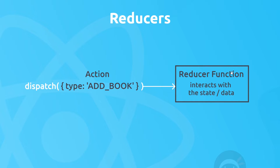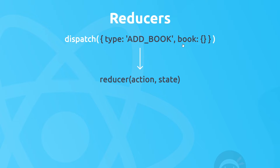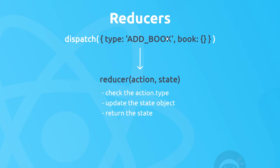Imagine we had a component and wanted to add a new book when a button is clicked. First, we'd create an action object that describes the type of change we want to make. We can also pass in a payload, which is the actual new book we want to add. Then the next step is to dispatch that action to the reducer using the dispatch function. The reducer takes in the action as a parameter and also takes in the current state — so if it's the books, this represents the books state. When the reducer runs, it looks at the action and checks the type — action dot type — and based on that, it runs different logic to update the state.